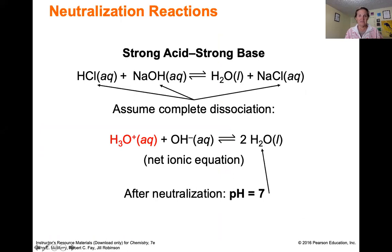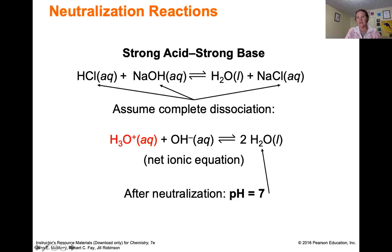HCl is a strong acid; NaOH is a strong base. The difference between the first reaction and the second is that they've changed it to net ionic. When HCl is in water, being a strong acid, it's completely dissociated to make H₃O⁺ and Cl⁻. Sodium hydroxide similarly separates Na⁺ from OH⁻. So the reaction is really the hydronium cation from HCl and the OH⁻ from sodium hydroxide reacting with each other to make water, neutralizing the acid and base properties.